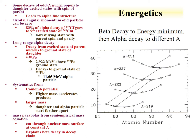Alpha particle emission can often demonstrate fine structure. This is due to the fact that during the decay, the parent can decay to an excited state of the daughter. This is often because the daughter nucleus and the parent nucleus spin and parity need to match up to a certain degree. For instance, californium-249 goes to the ninth excited state of curium-245, because that is the lowest-lying state with the same parent spin and parity.